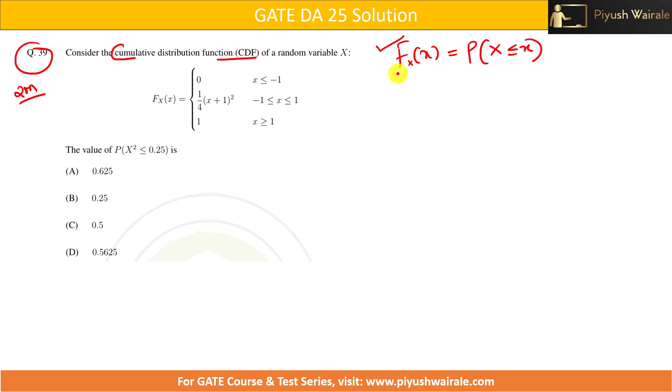We have discussed a few properties also. The value of this CDF will always be between zero and one. Also, if we have probability of a ≤ X ≤ b, it equals nothing but CDF of b minus CDF of a. That is what we have discussed.